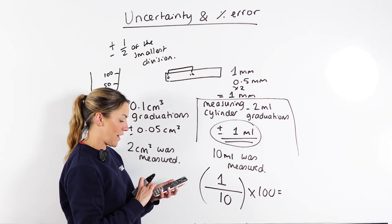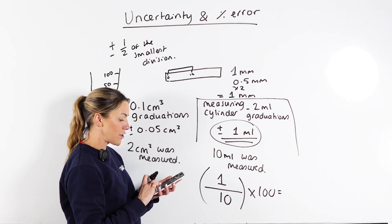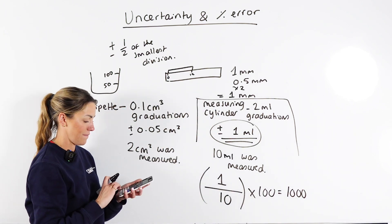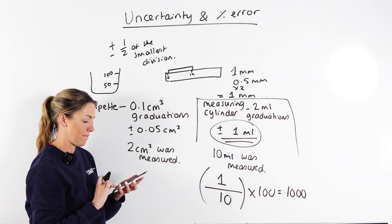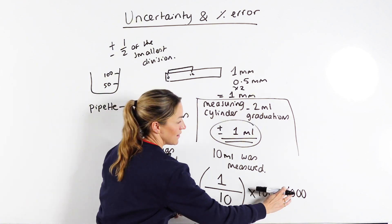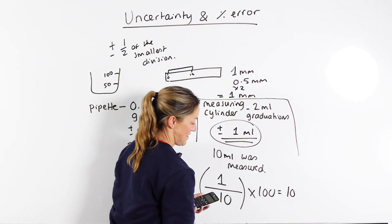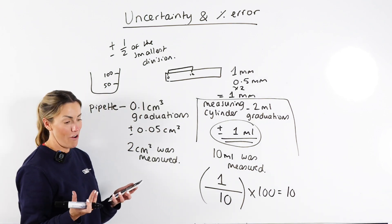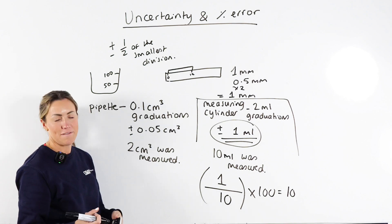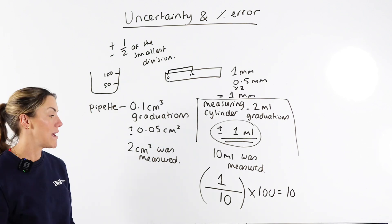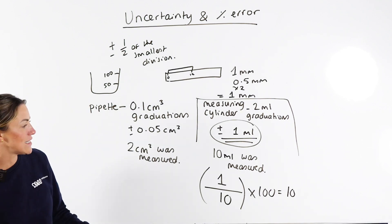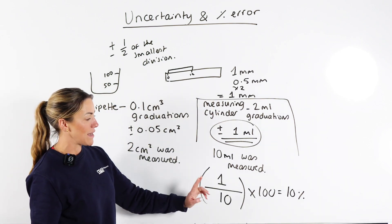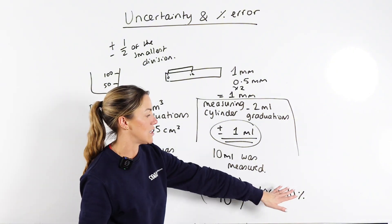1 divided by 10 is 0.1, obviously times it by 100 is 10 — so the percentage uncertainty would be 10 percent. It's the uncertainty divided by the quantity measured, times 100 to get a percentage.